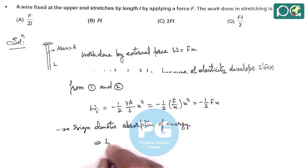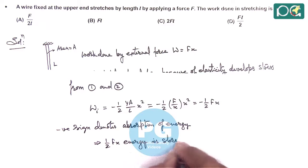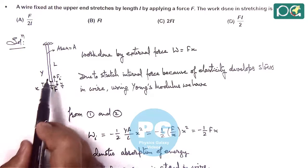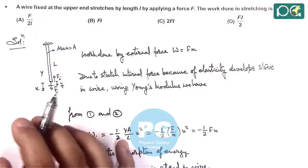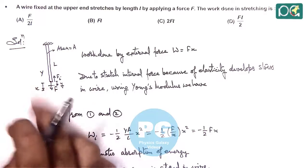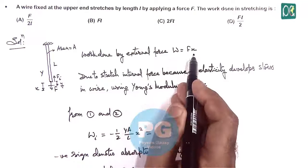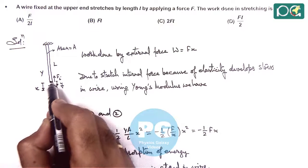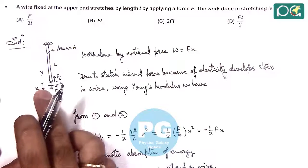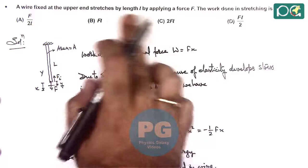This implies half FX energy is stored in the wire. This much amount of energy is absorbed by the wire in the form of elastic potential energy. This was used in a previous question asked in 2003 also. So we can say: work done by external force is simply FX; work done in stretching the wire, or the elastic energy stored in the wire, is half FX. Here X is given as the length L by which it is elongated.